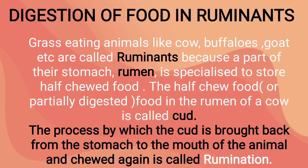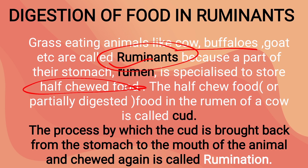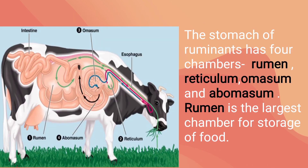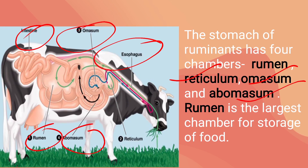The last topic: digestion of food in ruminants. Grass-eating animals like cow, buffalo, goat, etc. are called ruminants, because a part of their stomach called the rumen is specialized to store half-chewed food. The partially digested food stored in the rumen is known as cud. The process by which the cud is brought back from the stomach to the mouth to be chewed again is called rumination. The stomach of ruminants has four chambers: rumen, reticulum, omasum and abomasum. The rumen is the largest chamber and is used for storage of food.